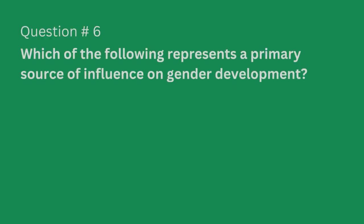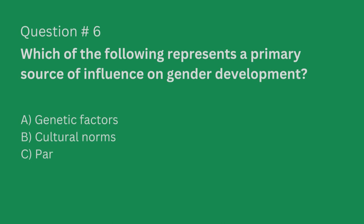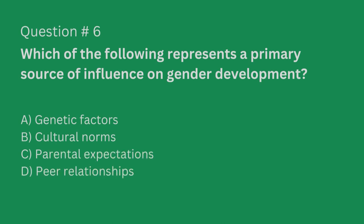Question number six. Which of the following represents a primary source of influence on gender development? A. Genetic factors. B. Cultural norms. C. Parental expectations. Or D. Peer relationships.